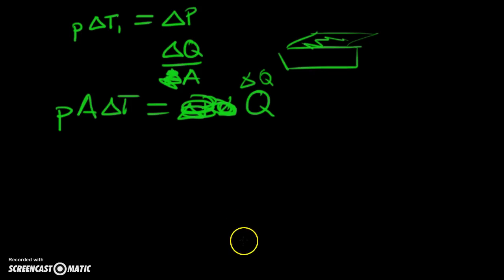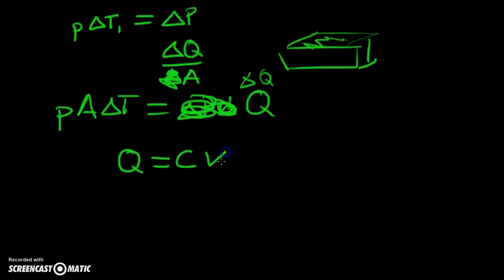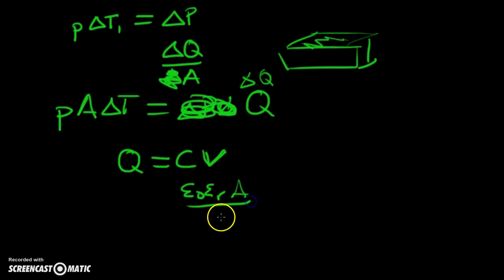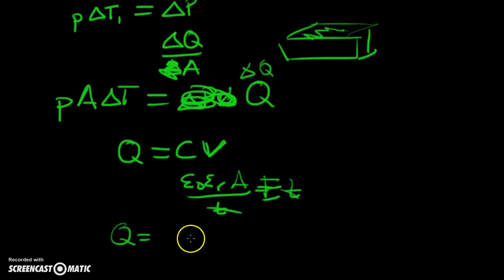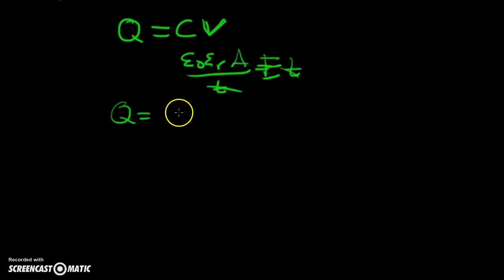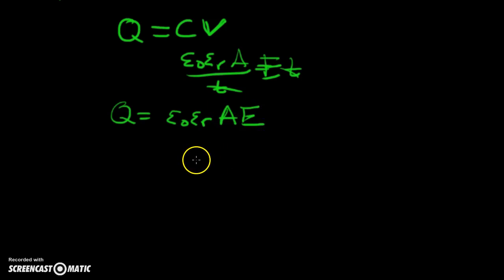How do we calculate voltage from charge? We want to know how many volts are across this material. From the simple equation Q equals C times V, and the capacitance equals permittivity times area divided by thickness. The voltage equals the electric field times the thickness. You can see how the permittivity plays into this example, and you see the thickness terms appearing in the equation.